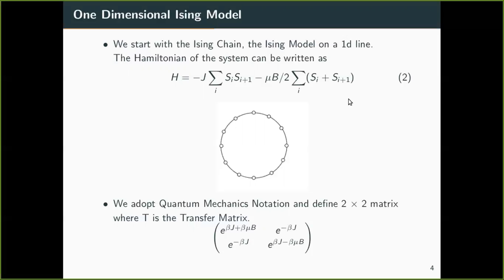When we write down the partition function, we can even adopt the quantum mechanics notation and define two by two matrix which is the T matrix and transfer matrix. So this is what the transfer matrix comes out to be and we can calculate all the macroscopic quantities from this.